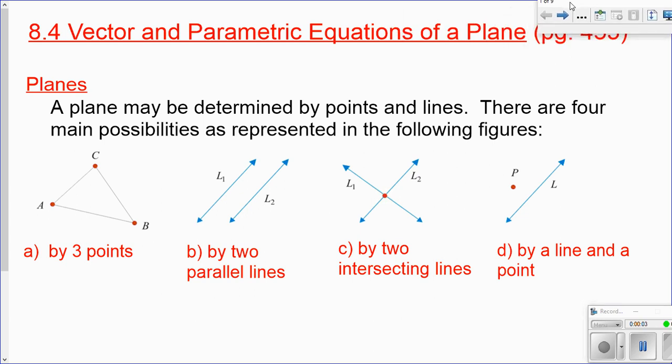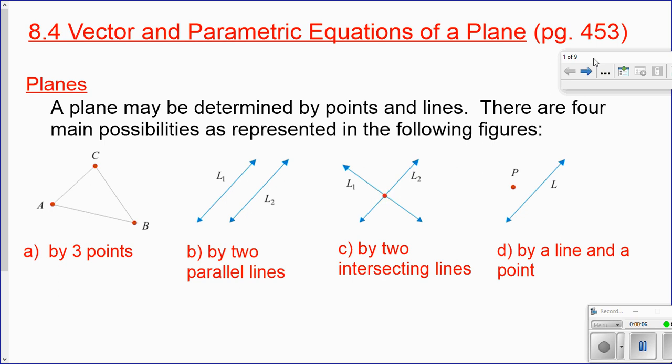Next up is Section 8.4, Vector and Parametric Equations of a Plane in 3-Space. Obviously planes have to exist in 3-space, and we talk about four particular situations. The section starts on page 453 in the textbook, so we're really rolling through Chapter 8 here.